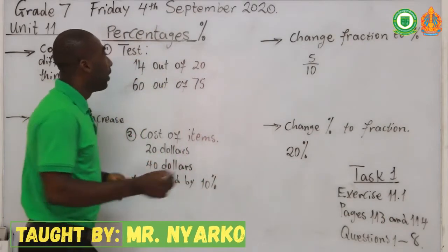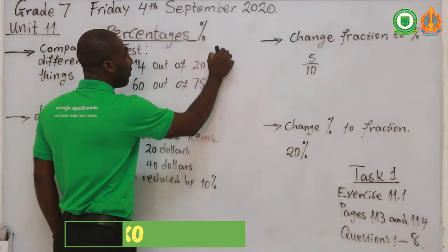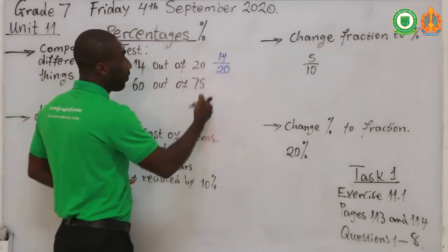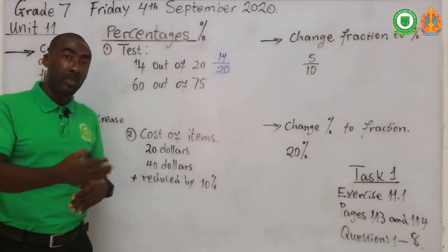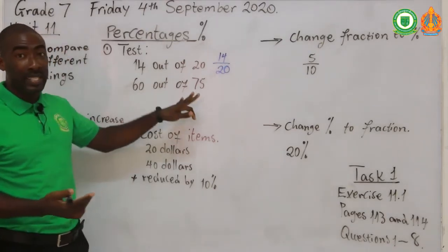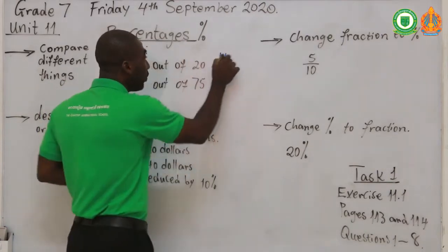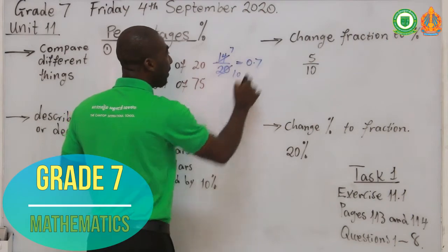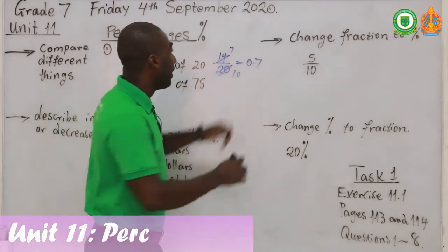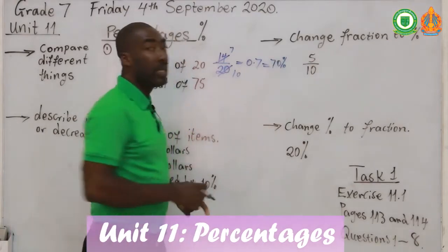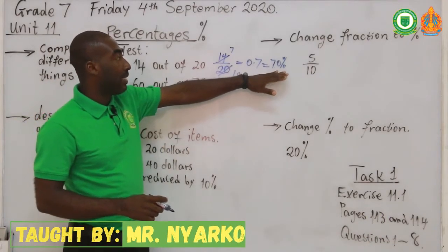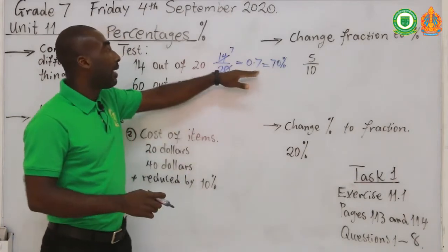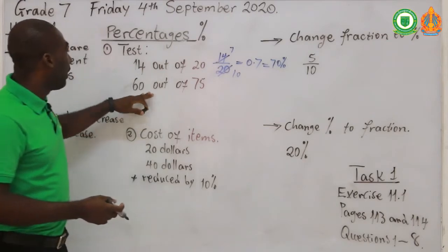So 14 out of 20 means the fraction 14 over 20. We reduce the fraction to its smallest form: divide both by 2 to get 7 over 10, then divide by 10 to get 0.7. Those of you who don't follow — 70% is the same as 70 over 100, which equals 0.7. So your math score is 70%.